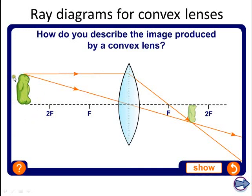So we start off with the object a long way away. We always draw this ray. This ray is going straight through the centre of the lens so it doesn't bend. It's travelling along the normal both of these points so that one goes straight on.